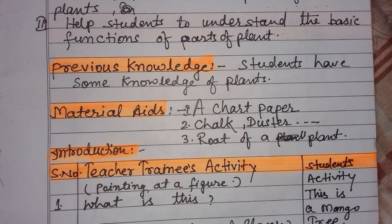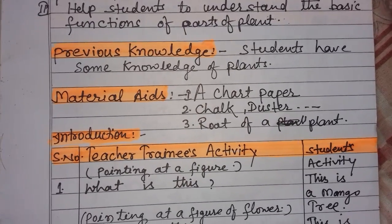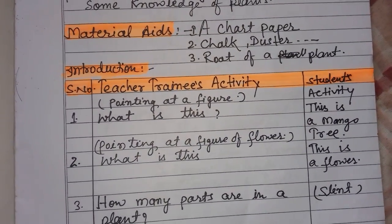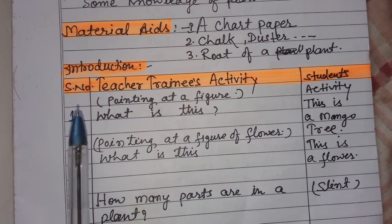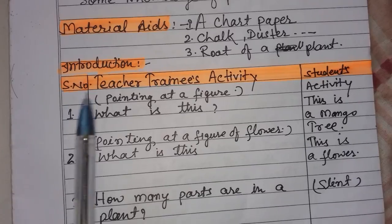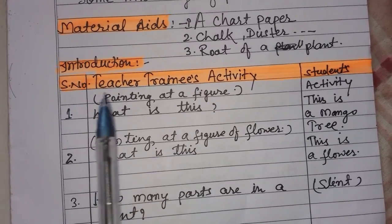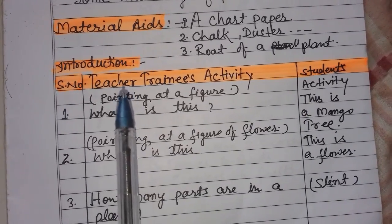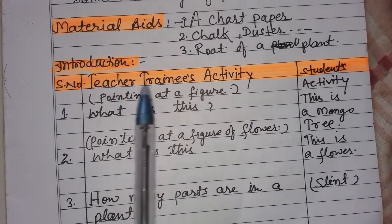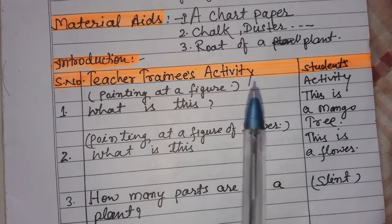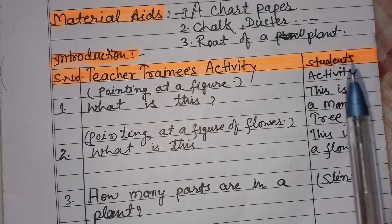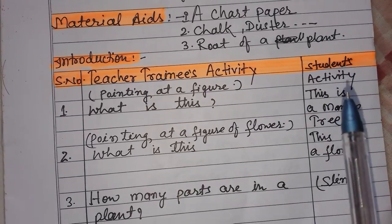Introduction. In the introduction section, there are three columns. First is serial number. Second is teacher training activities. Third is students activities.